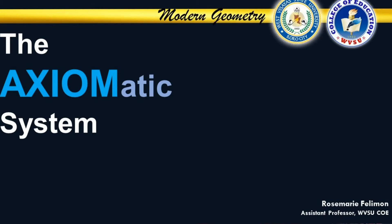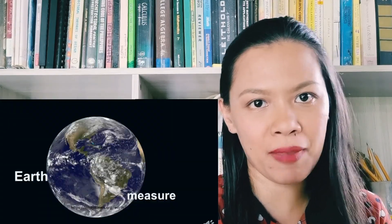Welcome back to Modern Geometry. Today, we are going to learn about the Axiomatic System. The history of mathematics tells us that our ancestors used mathematics to describe the Earth. No wonder that geometry is referred to as the study of Earth's measure.